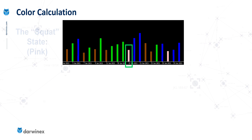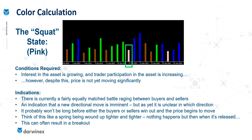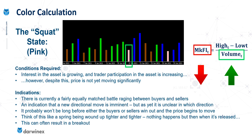Finally we come to the fourth state — pink and the squat state. The conditions here are exactly the opposite of the fake state: a decrease in the indicator's value while we see an increase in volume. I likened this previously to a spring being wound up — while you're winding it up, it's gaining energy but the movement is very low, just like the small price movement we see on the chart. But as soon as that spring is released, all of that energy is released and there's a big movement. This is why the squat state is often associated with powerful breakouts.